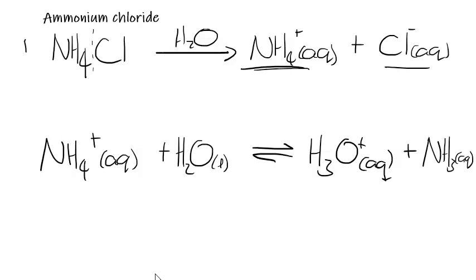So this would be the first equation that we would show, this would be the second equation that we would show, and we would say that a solution of ammonium chloride would have a pH of less than 7, because it's an acid, it's created hydronium ions in the solution.